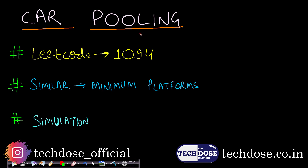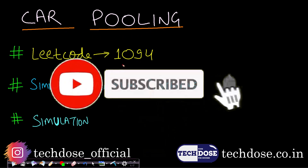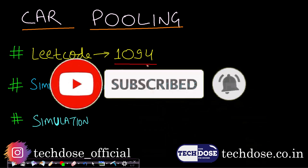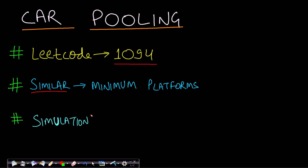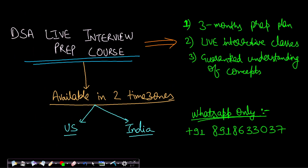Hello guys, welcome back to Tech Dose. In this video we will see the carpooling problem, which is LeetCode number 1094. A similar problem which I have already uploaded is the minimum platform problem. You can go there and watch that, or you can watch this video first. These two problems are basically very similar — this is a simulation-based problem.